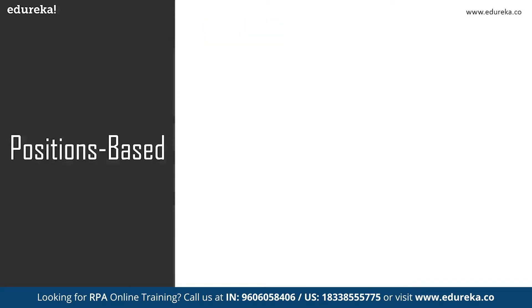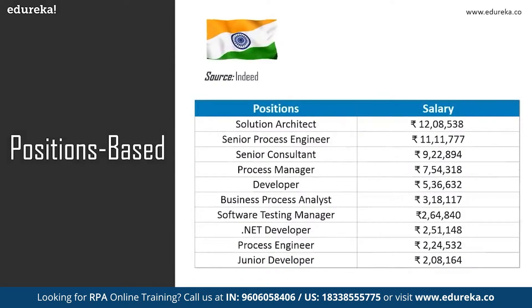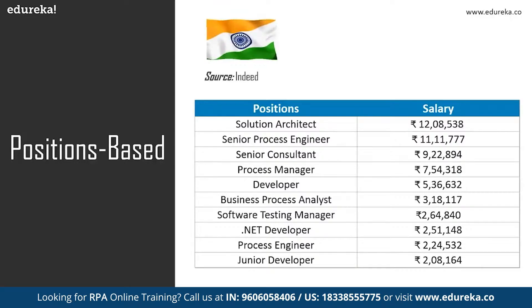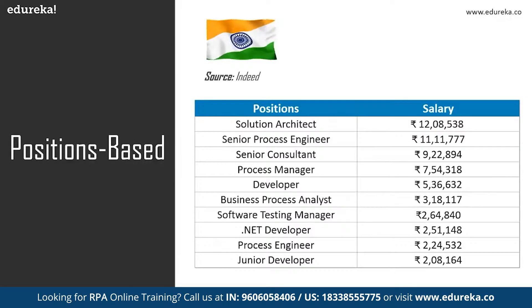Now let's look at the same positions in India. A solution architect earns around 12 lakh per year, a senior process engineer around 11 lakhs, a senior consultant around 9 lakhs, a process manager around 7.05 lakhs, a developer starts at 5.36 lakhs, a business process analyst earns around 3 lakhs, and the testing manager, .NET developer, process engineer, and junior developer all earn around 2 lakhs. Some roles popular in the United States are not as prominent in India.